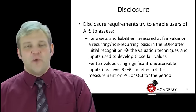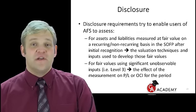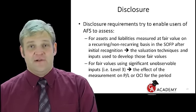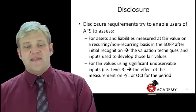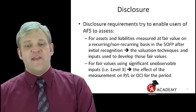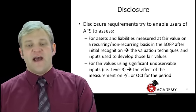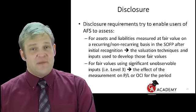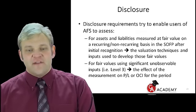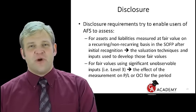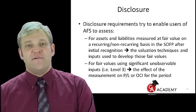Secondly, what were the inputs? And from which level did you go and source those inputs? For fair values using significant unobservable inputs — that means your Level 3 — you must disclose the effect of the measurement on profit and loss or on OCI for the period.